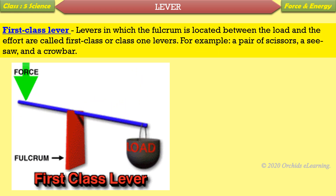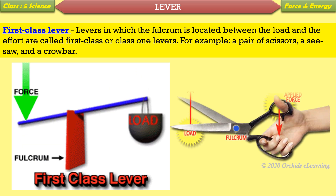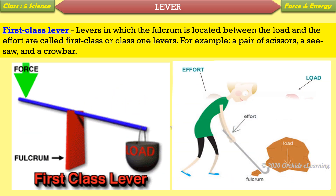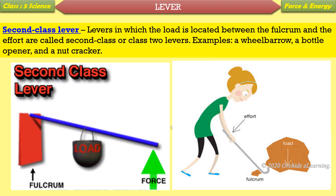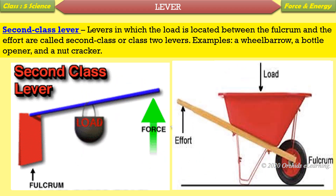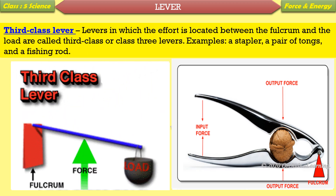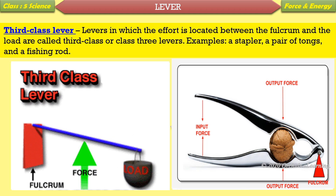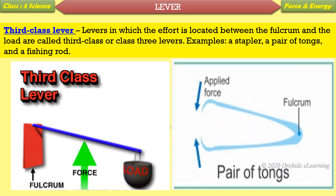First class lever: Levers in which the fulcrum is located between the load and the effort are called first class levers. Examples: a pair of scissors, a seesaw, and a crowbar. Second class lever: Levers in which the load is located between the fulcrum and the effort are called second class levers. Examples: a wheelbarrow, a bottle opener, and a nutcracker. Third class lever: Levers in which the effort is located between the fulcrum and the load are called third class levers. Examples: a stapler, a pair of tongs, and a fishing rod.